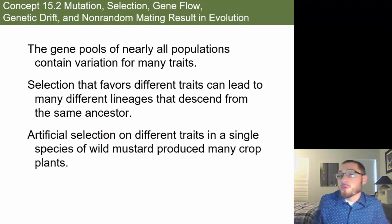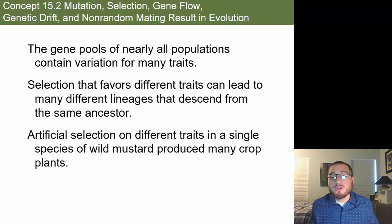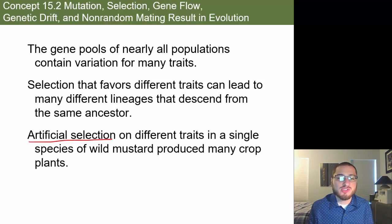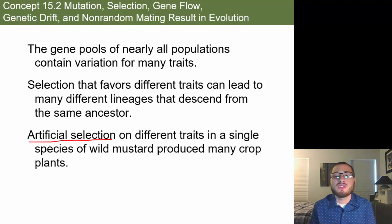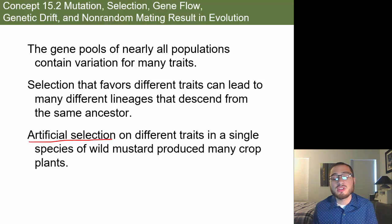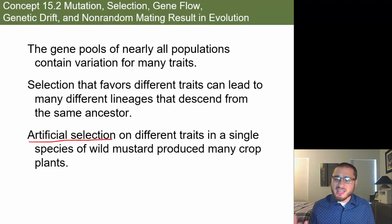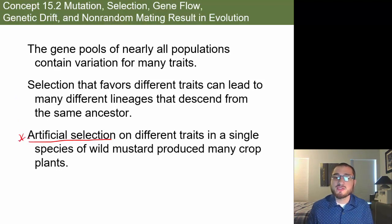We've been able to help prove natural selection through artificial selection — when humans pick which traits to select. We have been artificially selecting traits in organisms for thousands of years. With dogs, for example, we've been selecting and breeding them for thousands of years. That is not nature selecting which traits survive — it's humans doing it. That's why we call it artificial selection, not natural selection.